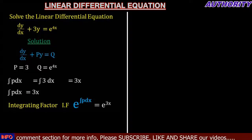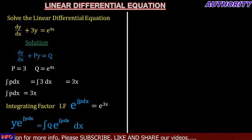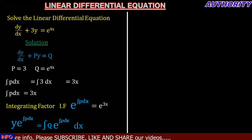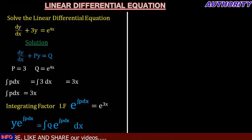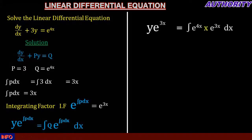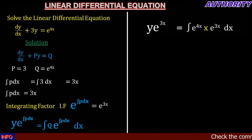The solution to the differential equation is y multiplied by the integrating factor equals the integral of Q multiplied by the integrating factor dx. So we have y times e raised to power 3x equals the integral of Q, which is e raised to power 4x, multiplied by the integrating factor e raised to power 3x, dx.